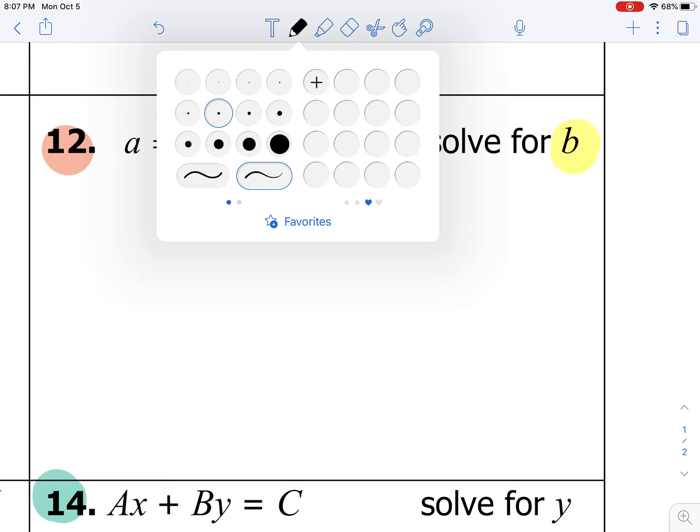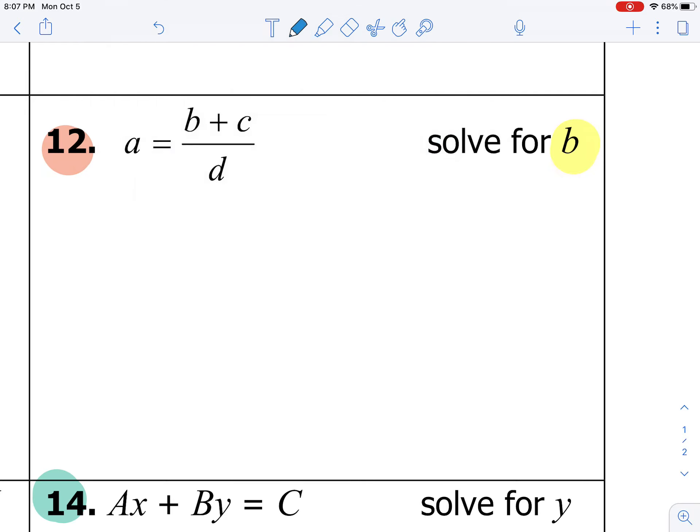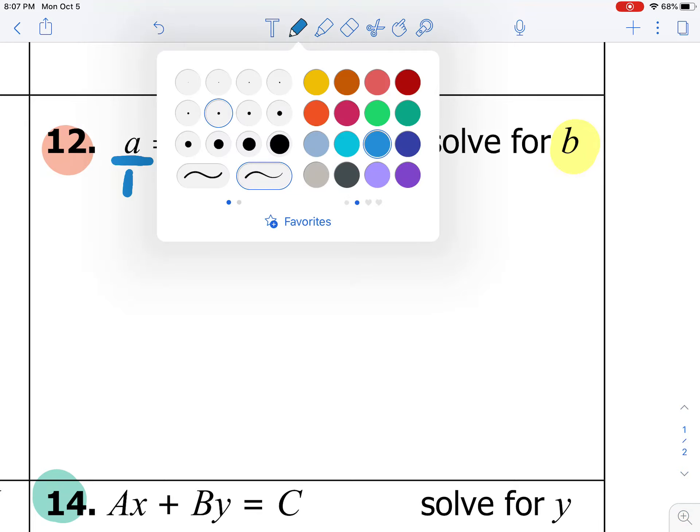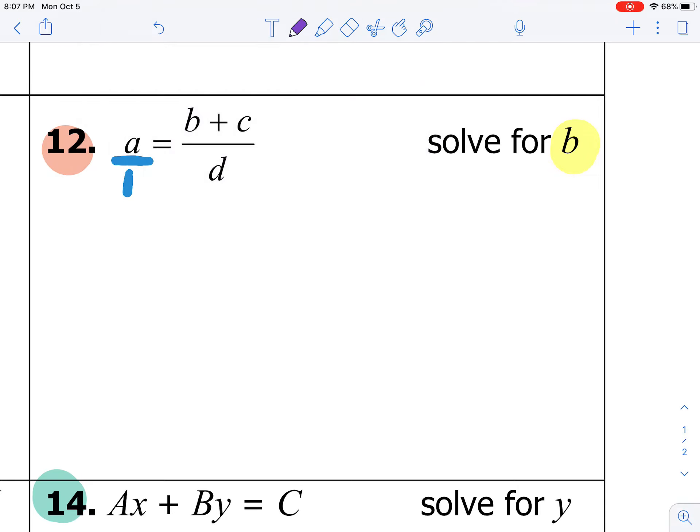So to do that, we are going to put A over 1. By putting A over 1, what we have is a fraction equal to another fraction. So what we can do from here is cross multiply. So if I take A times d, I have ad equals, then 1 times b plus c is just b plus c.